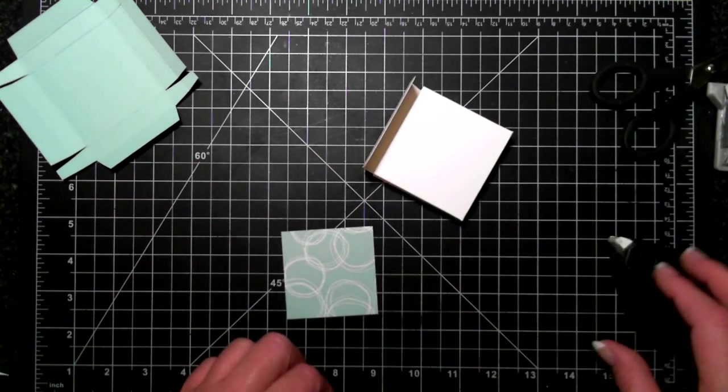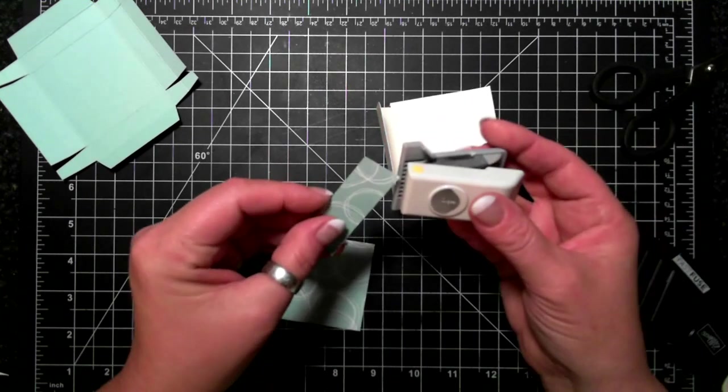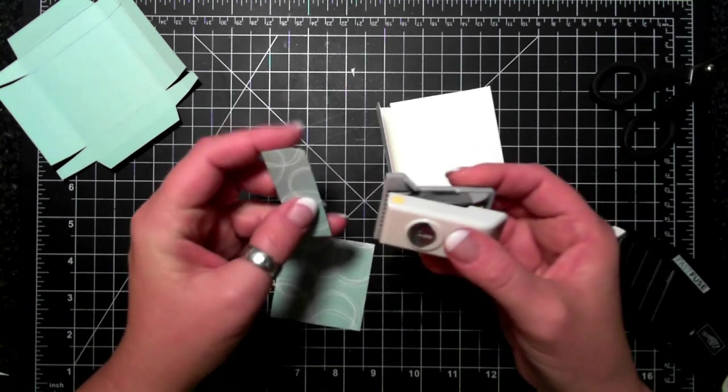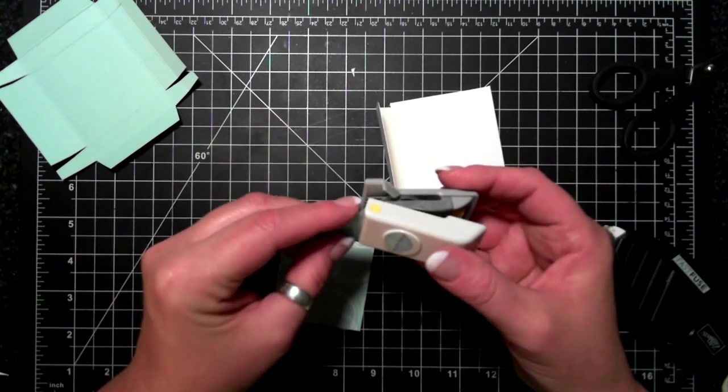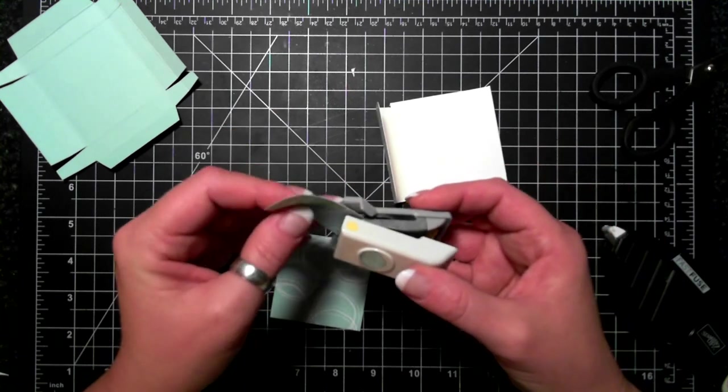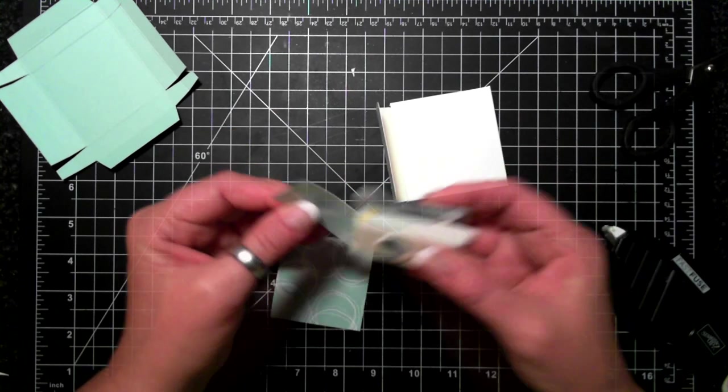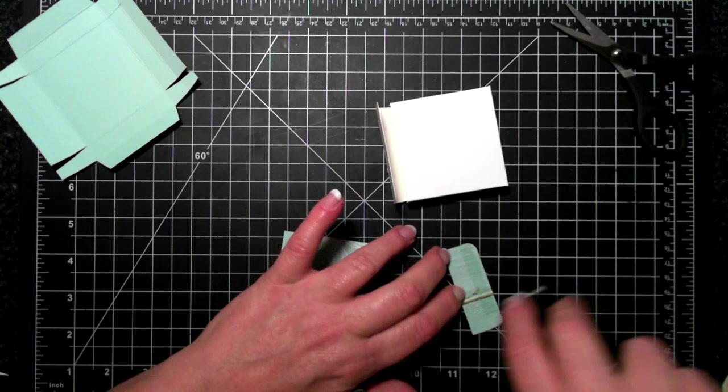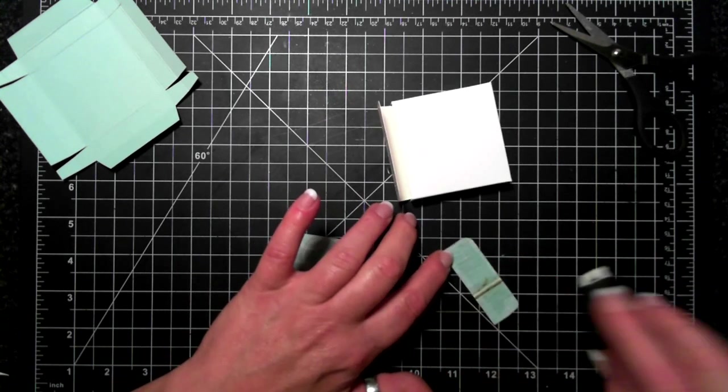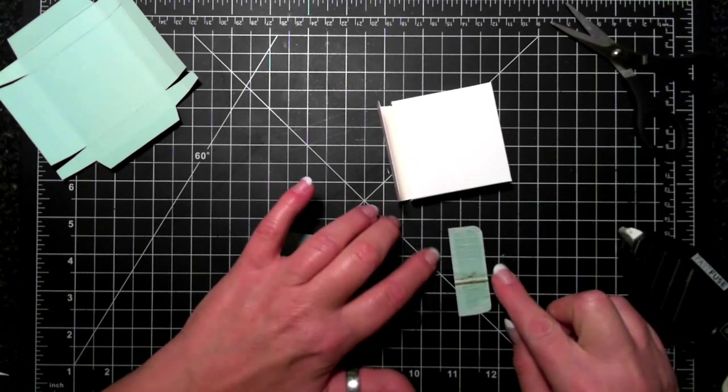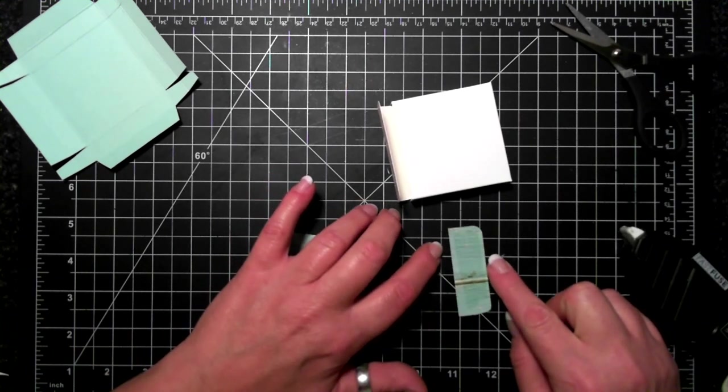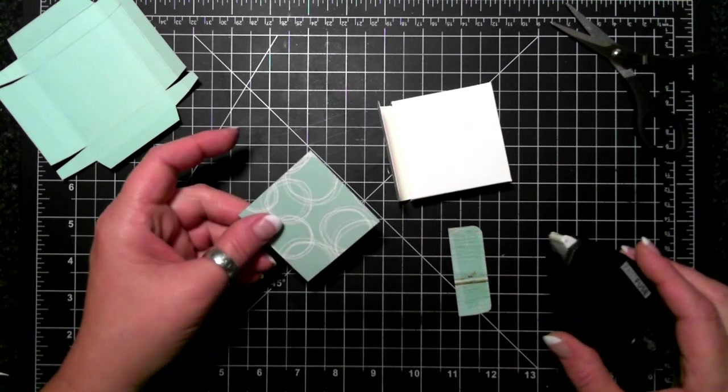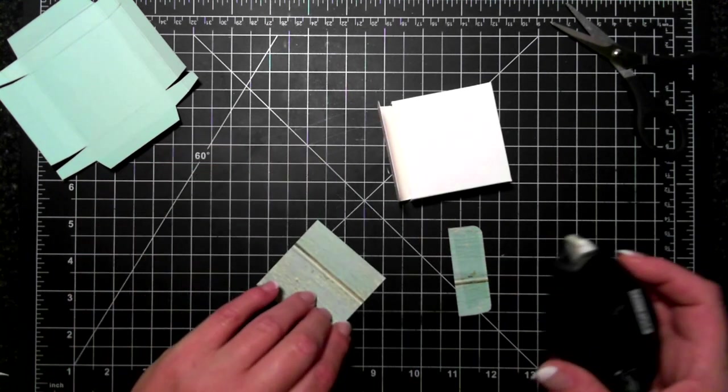I'm going to take this paper. I completely forgot where I got this from. This little piece is two and three eighths by seven eighths, and this little piece is two and three eighths by two and three eighths.